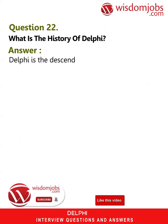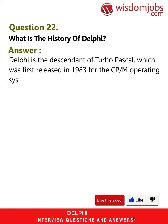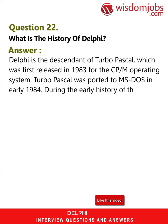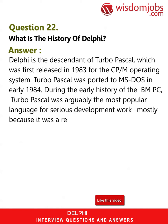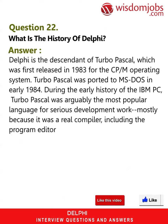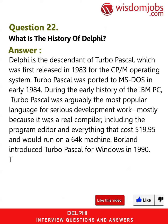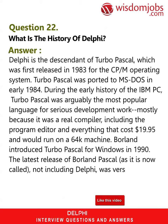Question 22: What is the history of Delphi? Answer: Delphi is the descendant of Turbo Pascal, which was first released in 1983 for the CP/M operating system and ported to MS-DOS in early 1984. During the early history of the IBM PC, Turbo Pascal was arguably the most popular language for serious development work, mostly because it was a real compiler — including the program editor — that cost $19.95 and would run on a 64K machine. Borland introduced Turbo Pascal for Windows in 1990, with the latest release of Borland Pascal (version 7.0) in late 1992.